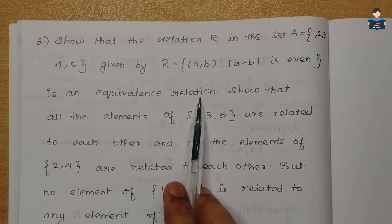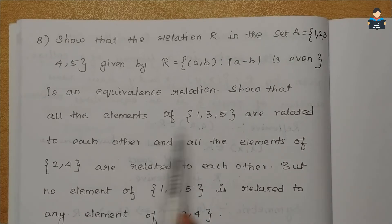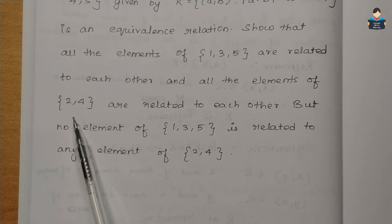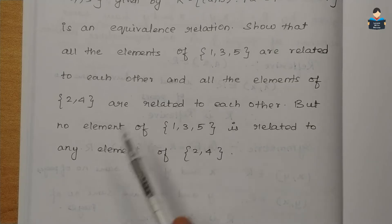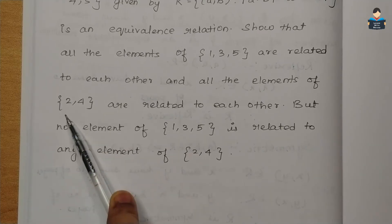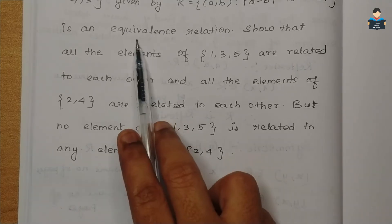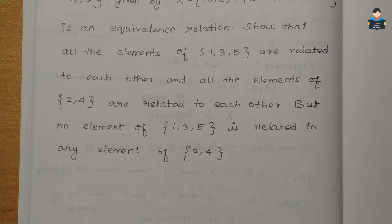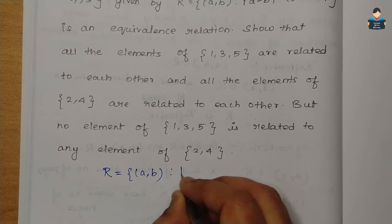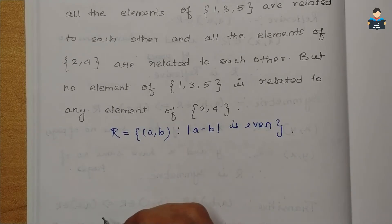In the relation, to prove it is an equivalence relation, we will prove that 1, 3, and 5 are related to each other. The relation is: R = {(a, b) : |a - b| is even}. So first, we will check the reflexive condition.